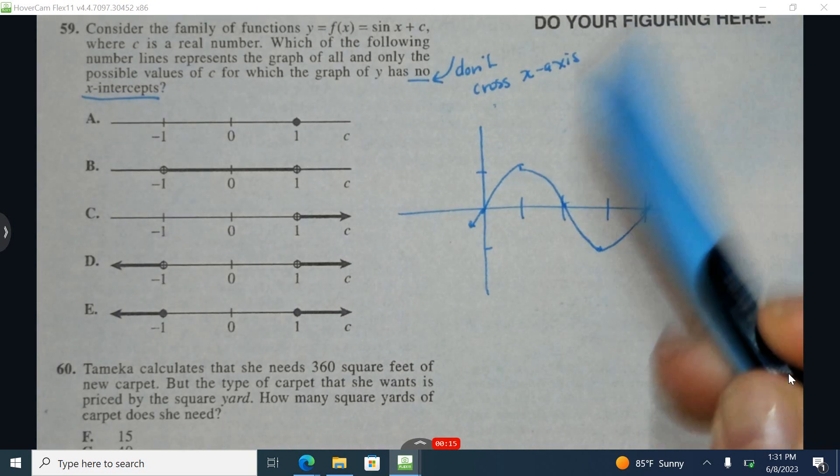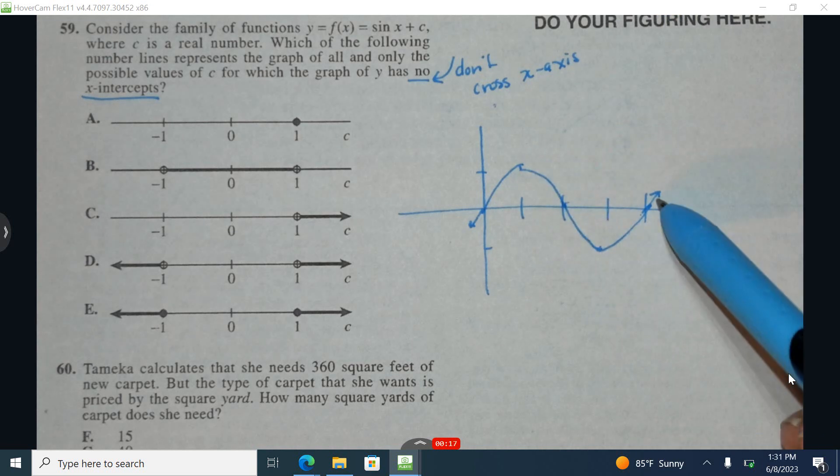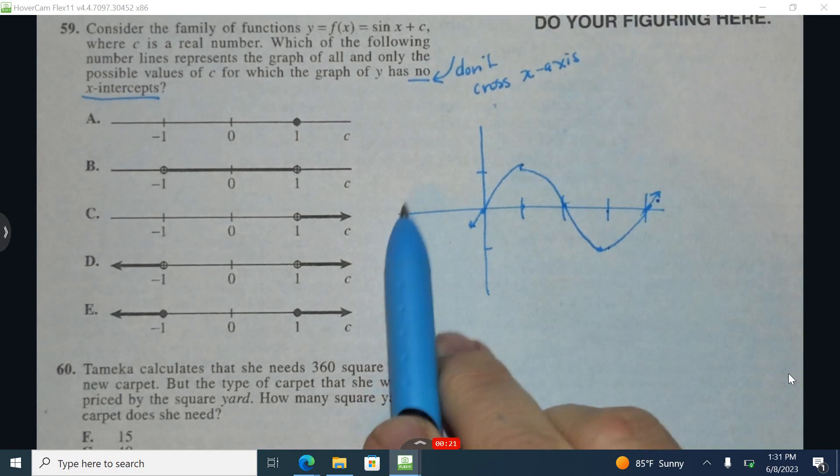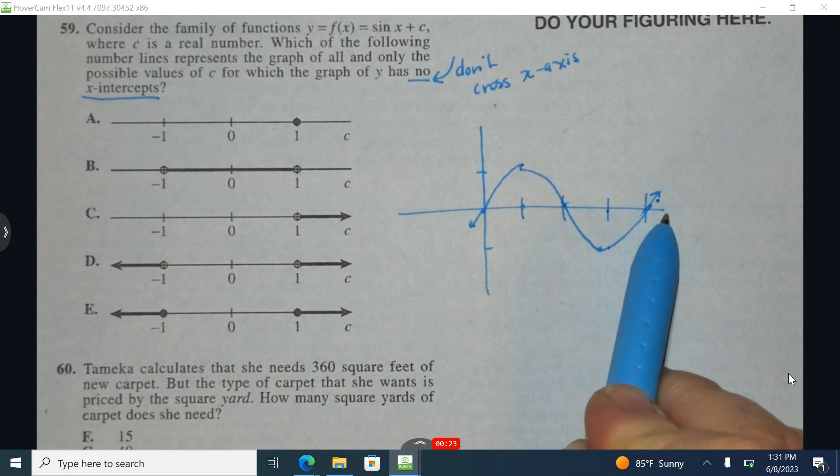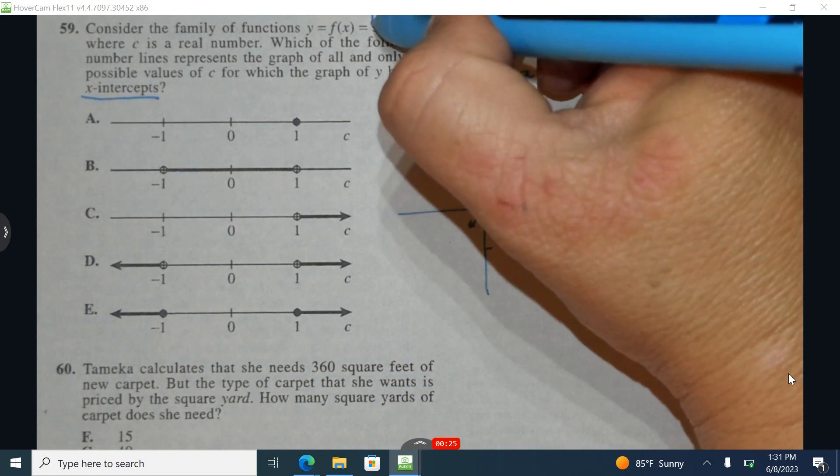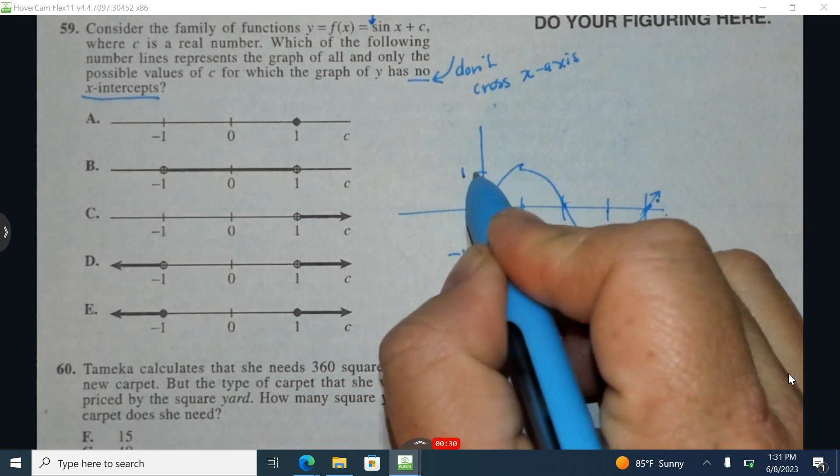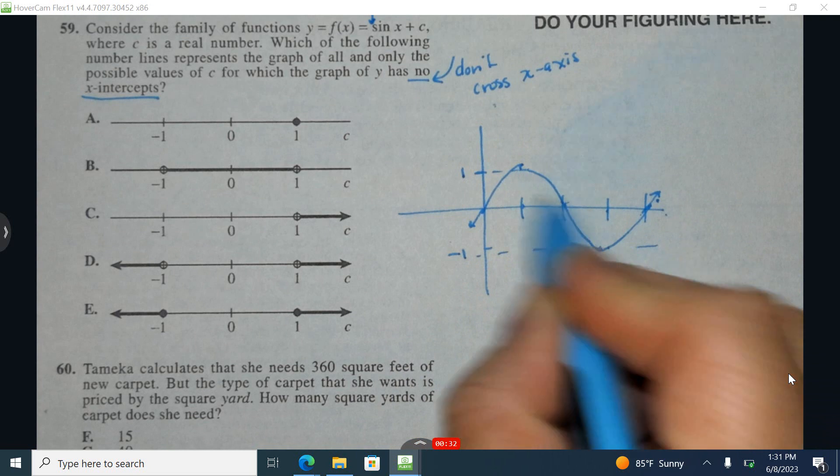So this is the basic sine function. One cycle is shown here, and how high it goes and how low it goes from this midline is called the altitude. That number is represented by whatever is in front of the sine. So this goes up as high as one and as low as one.